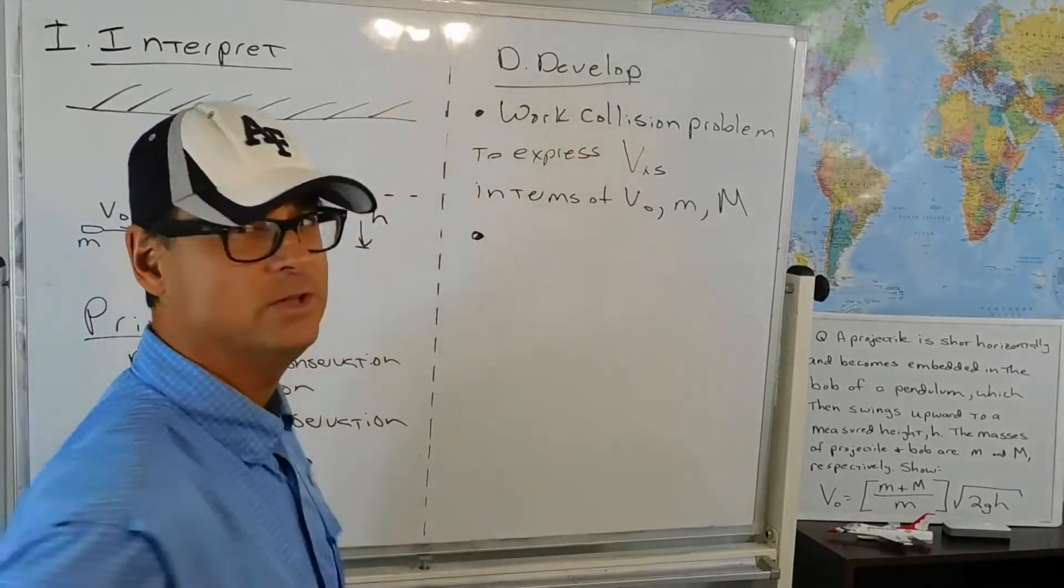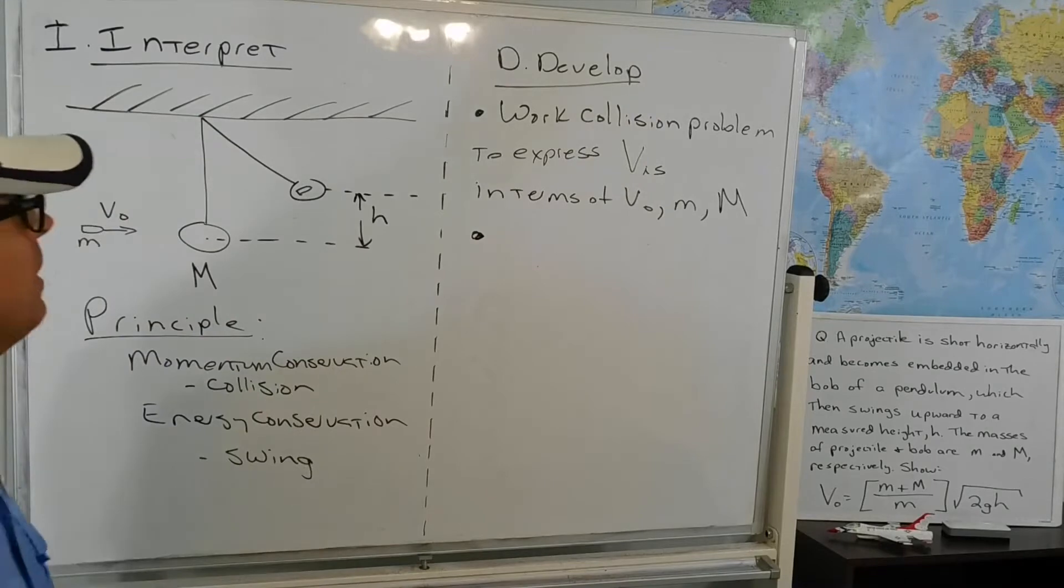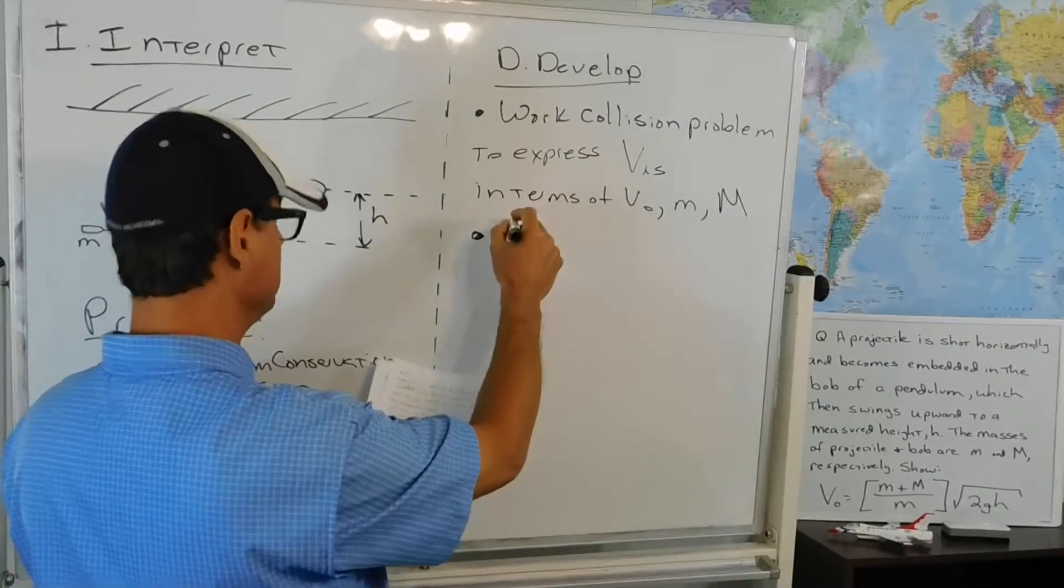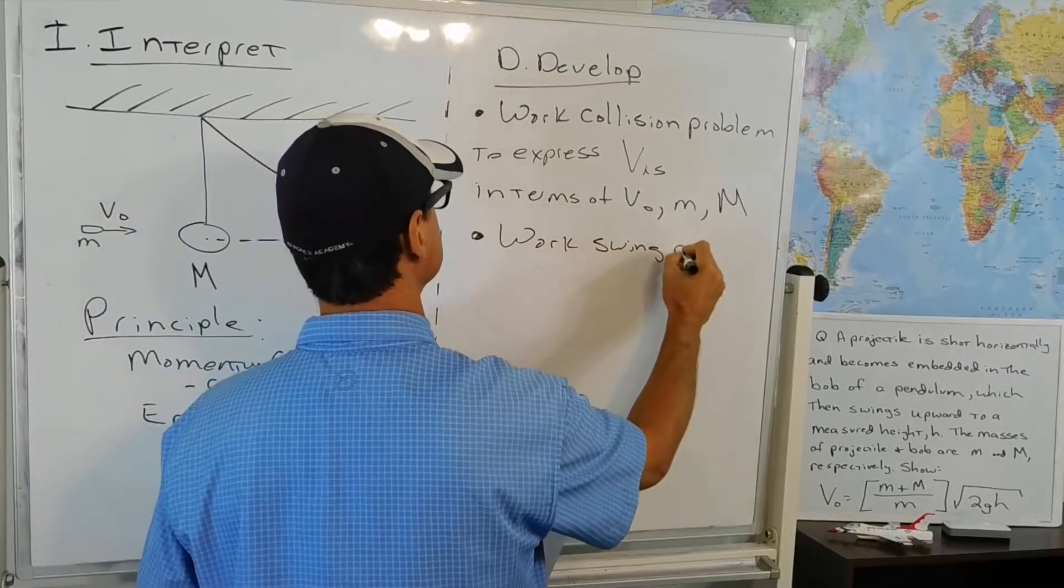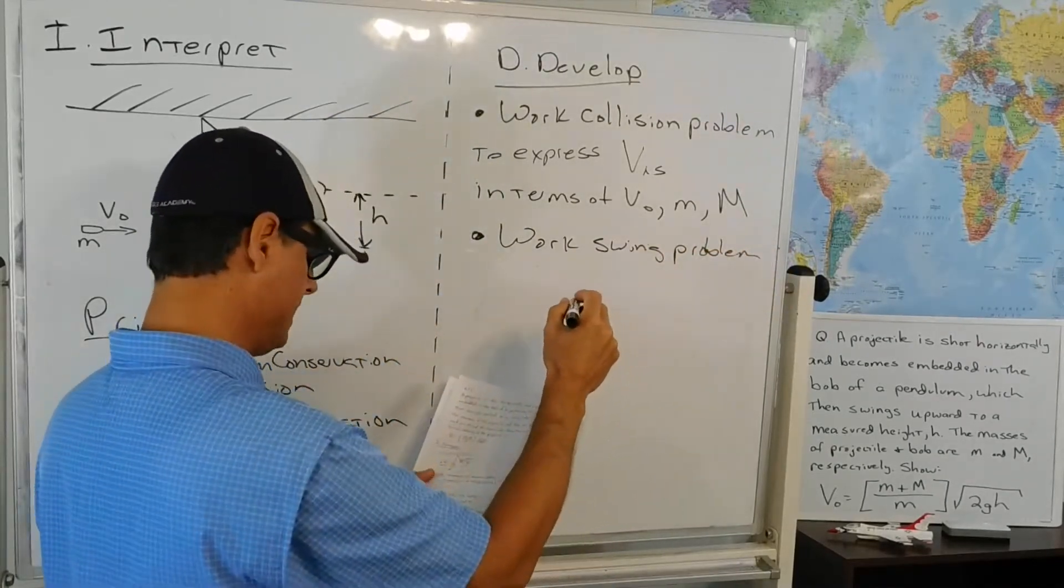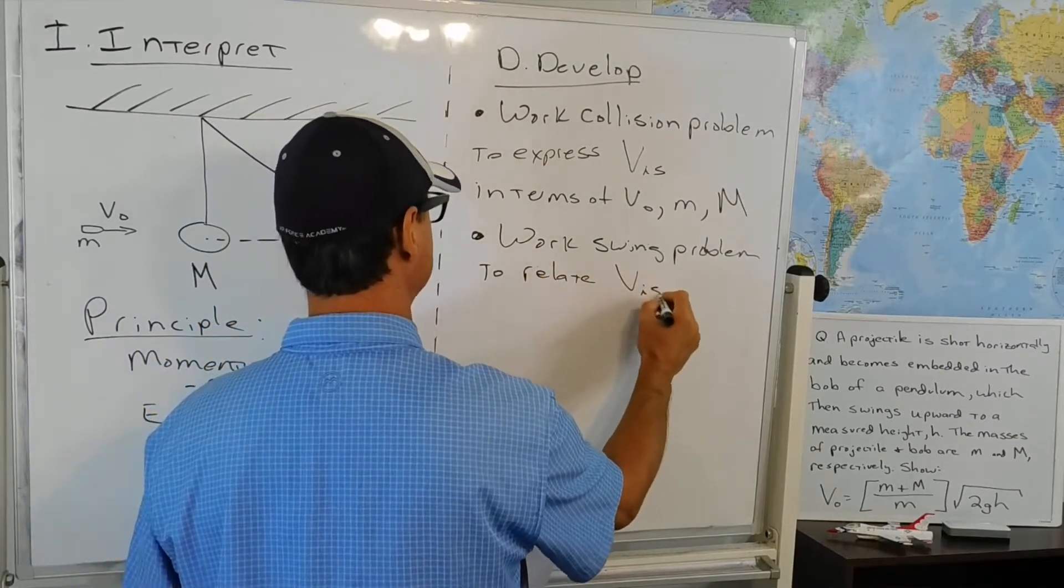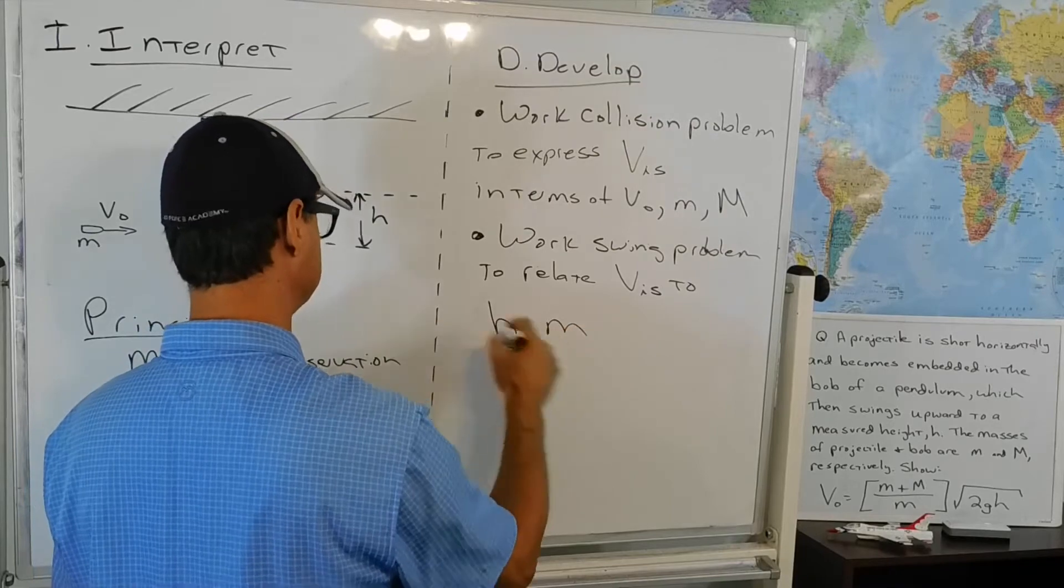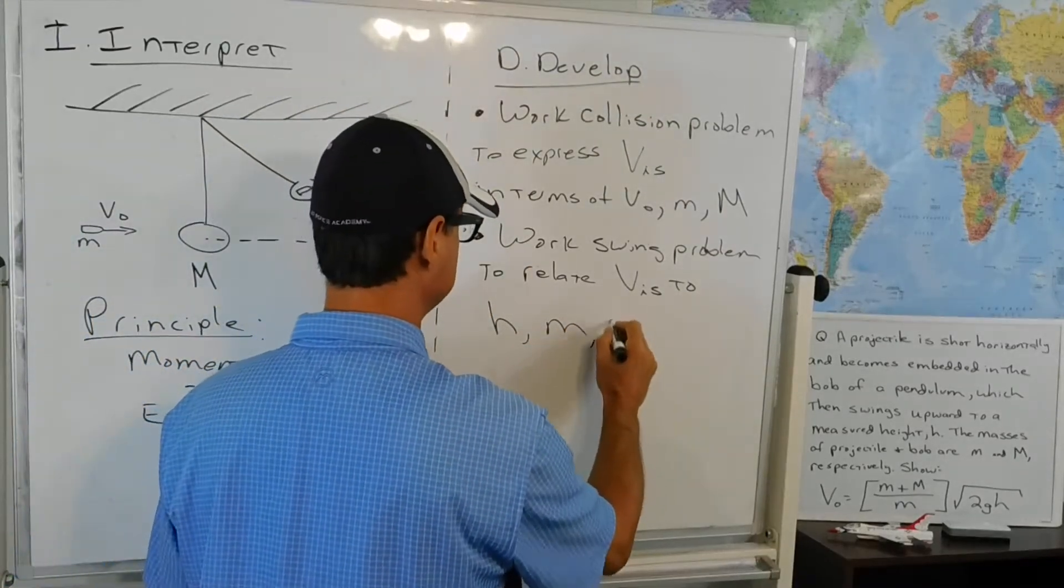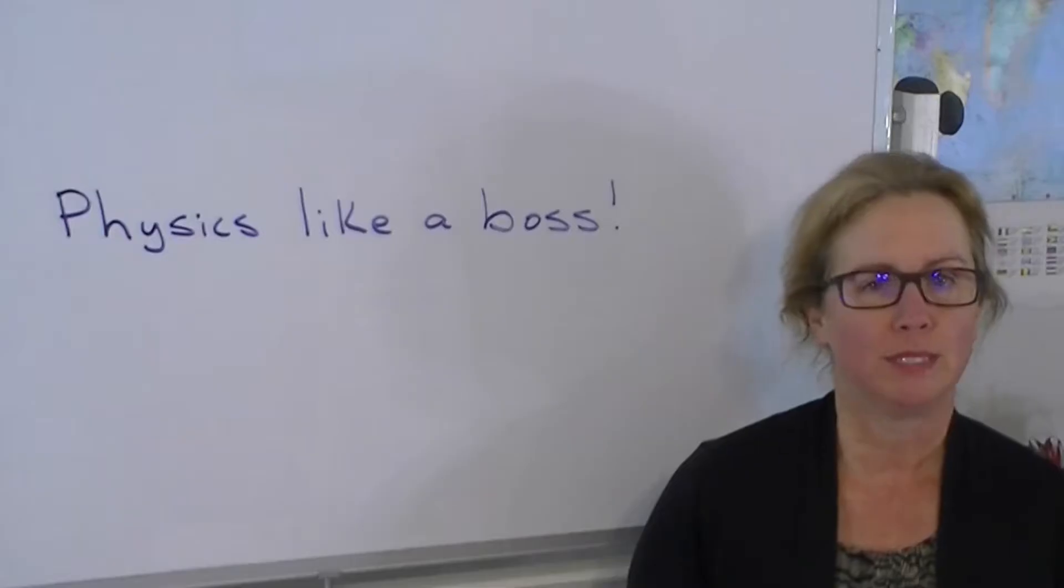Now the second step, and there could be sub-steps in this. That's sort of a standard, simple inelastic collision problem in one dimension. And then the second big step is to work the swing problem. And the goal of that is to relate the initial of the swing to the other unknowns in that problem, or to the givens in the problem, which are h, the height to which it swings, the mass of the projectile, and the mass of the bob. Science is a gift from God to help us master nature. But sin added thorns and thistles, requiring the sweat of your brow to succeed.